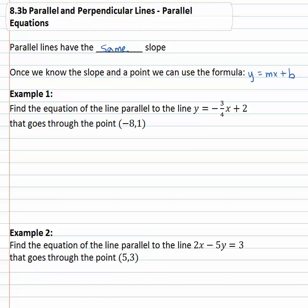So let's take a look at an example. We want to find the equation of a line that is parallel to y equals negative three-fourths x plus two. And we also want this line to go through the point negative eight comma one.